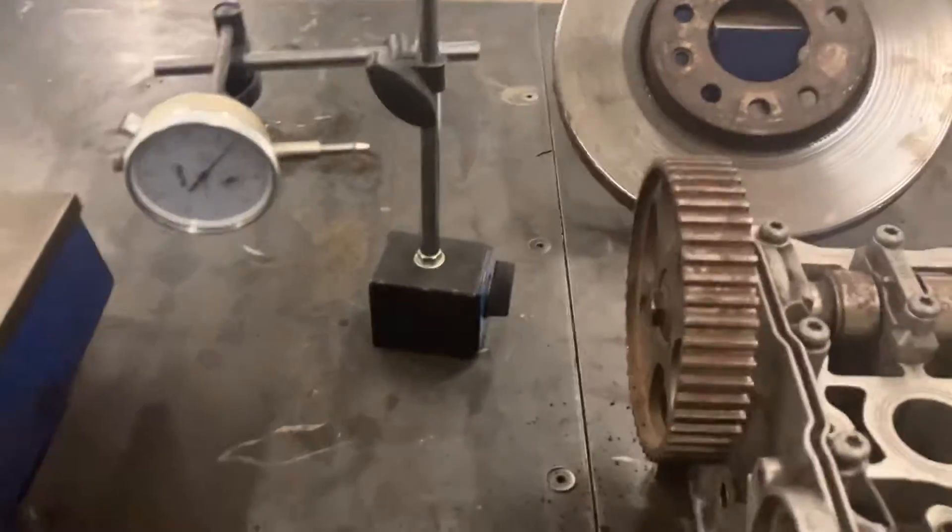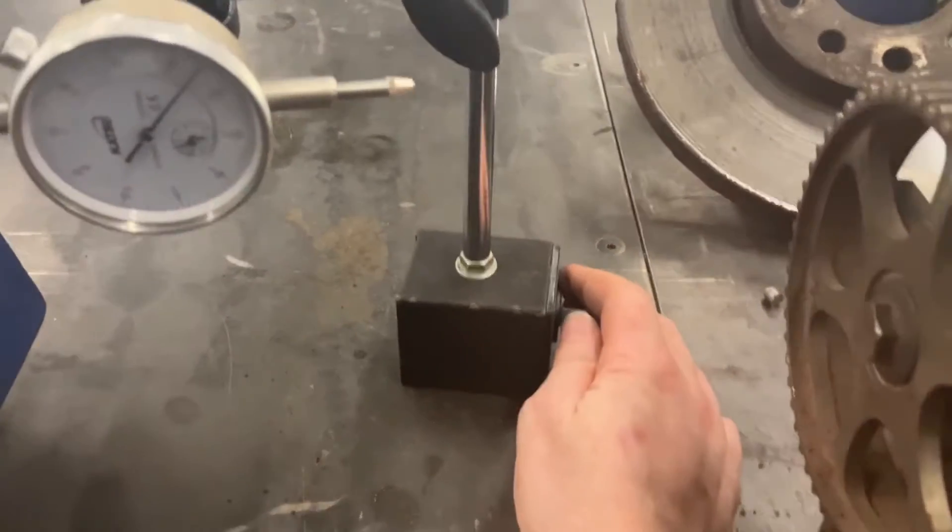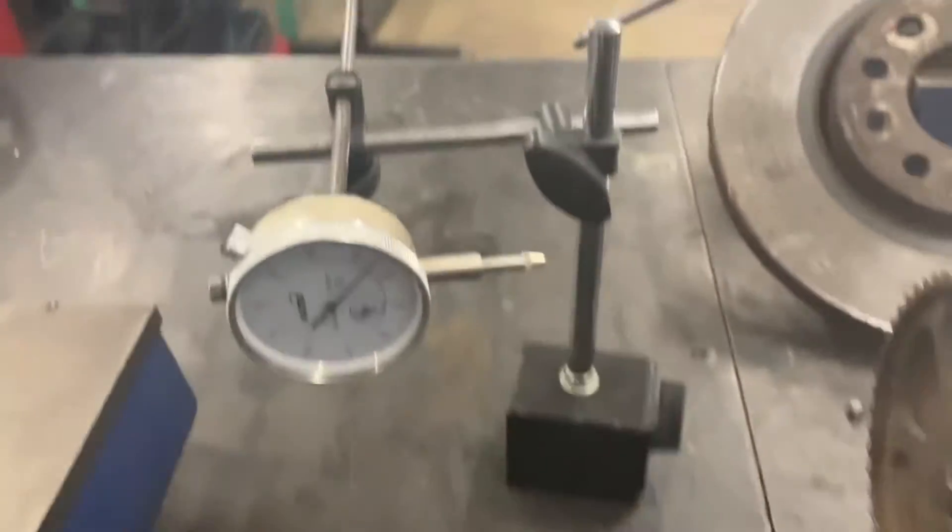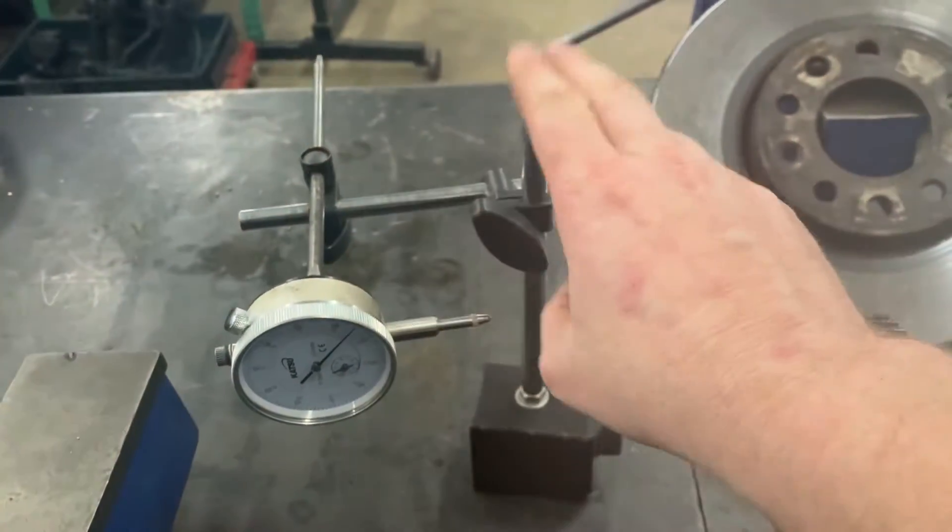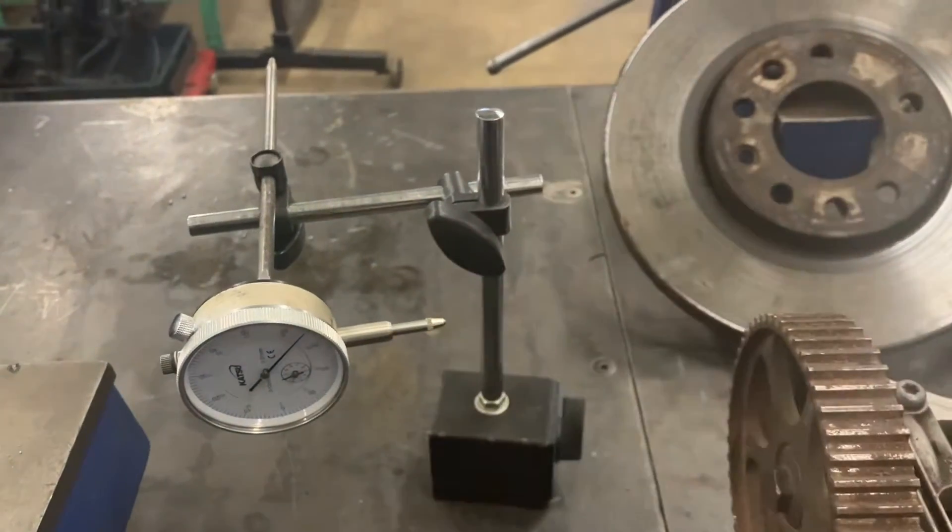Simply put, we've got a magnetic base that we can turn on or off to make sure the measuring device doesn't move, and a series of arms with linkages that all need tightening up when you do the test.